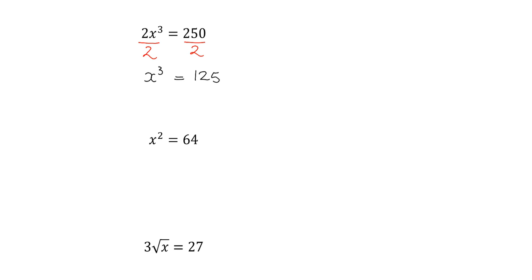Now the question is, what is x actually equal to? Hopefully you can immediately see by inspection that if something cubed is equal to 125, that something has to be 5. But if you didn't see that immediately, you know that the inverse of cubing is taking the cube root. So you take the cube root of 125 and that gives you 5.